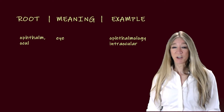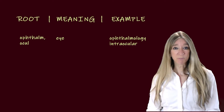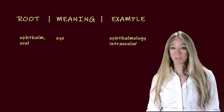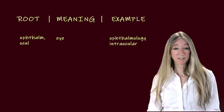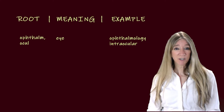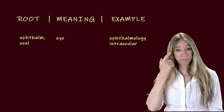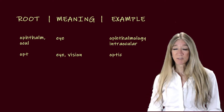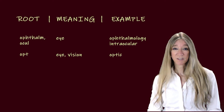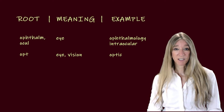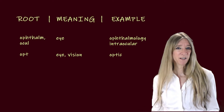The first roots are ophthalm and ocule, both meaning eye. Examples are ophthalmology, the study of the eye, and intraocular, as in intraocular pressure or IOP, something that's measured. The next term, opt, meaning eye, or in particular vision. An example is optic, like the optic nerve, and there are plenty of examples of this root in everyday life — optics, bad optics — that means a scene with a bad look to it.